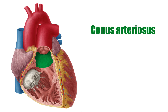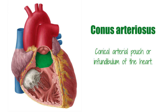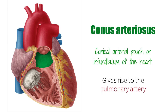The conus arteriosus, conical arterial pouch or infundibulum of the heart can be found in the upper left corner of the ventricle and gives rise to the pulmonary artery. The tendon of the conus arteriosus is a fibrous band that extends superiorly from the right atrioventricular fibrous ring and stretches between the posterior surface of the conus arteriosus and the aorta.